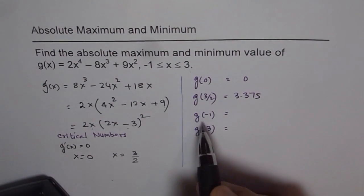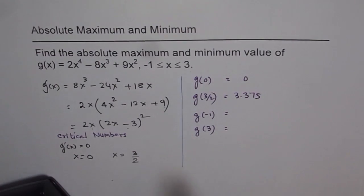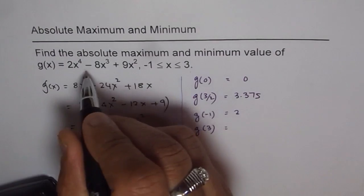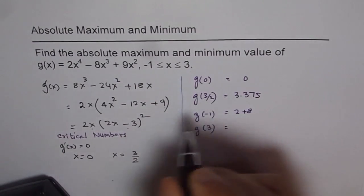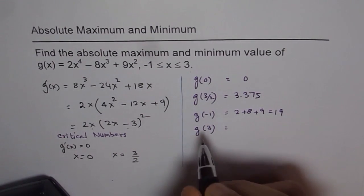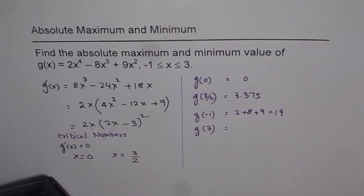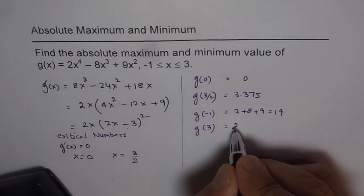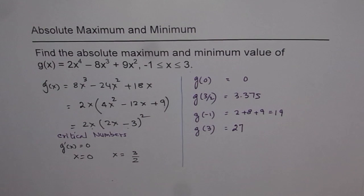Similarly, plug in -1 and calculate: 2(-1)⁴ - 8(-1)³ + 9(-1)² = 2 + 8 + 9 = 19. And if you plug in 3: 2(3)⁴ - 8(3)³ + 9(3)² = 27.